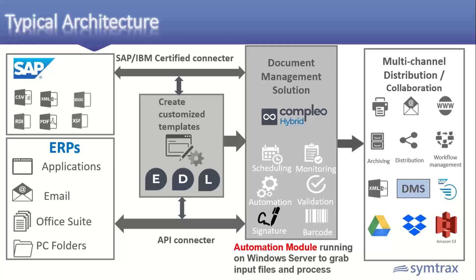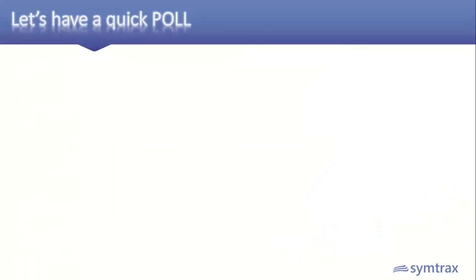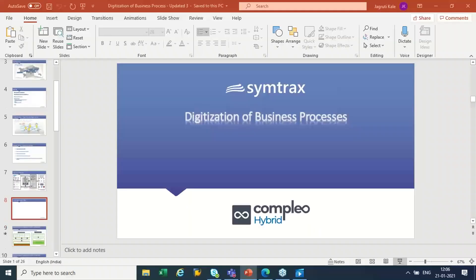On the right-hand side, you can see the multi-channel distribution platform: documents can be sent via email, printed, archived, sent for workflow approval, converted into XML, pushed back into a DMS, or stored on cloud repositories like SharePoint, Amazon S3 bucket, etc. A similar process is carried out for email, office, and PC inputs.